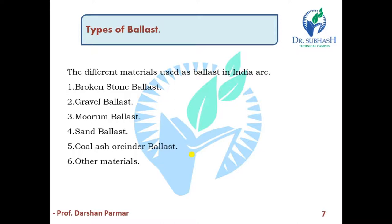If we talk about broken stone ballast — what is broken stone ballast? It is a type of material that increases the importance of the track. The stone ballast used offers good stability. Generally, the ballast is of a hard, tough, and non-porous type. The stone ballast works out to be economical in the long run.